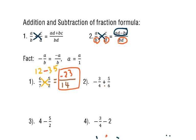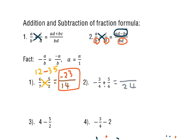Number two: for the addition, the denominator is 4 times 6, which is 24. Cross multiply: this one is negative 3, so negative 3 times something gives negative 18. Then negative 18 plus 20 equals 2. Reducing gives 1 over 12.